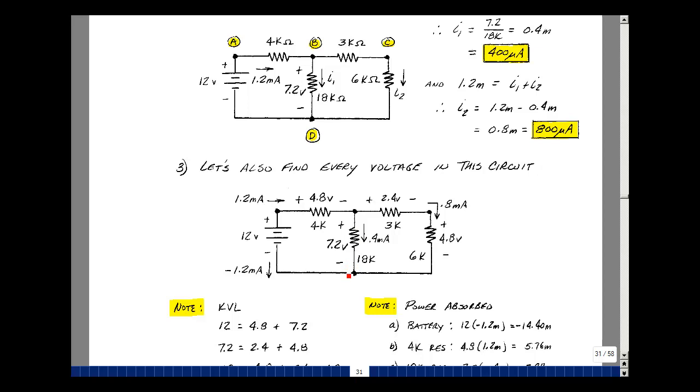We knew this voltage was 7.2, and we know the current in here was 0.4 milliamps. The current flowing in here is 0.8 milliamps, so we could then multiply 0.8 times 3k, and again, the milli and the k cancel, and I get 2.4. Likewise here, I could take the 0.8 milli times the 6k, and again, the milli and the k cancel, and I get 4.8 volts.